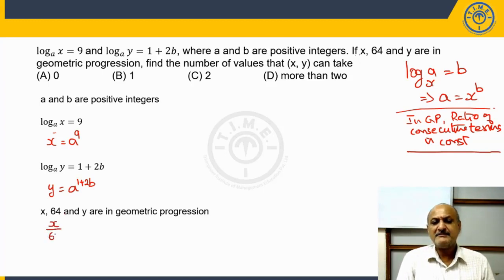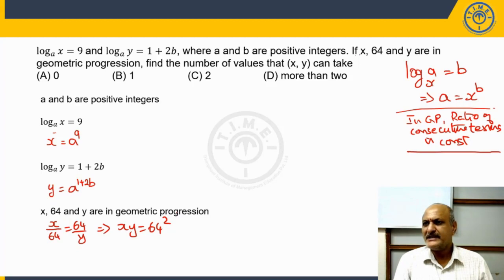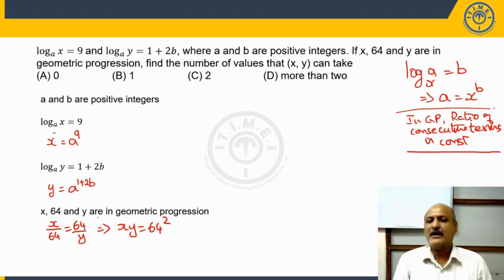Hence, we can write x/64 = 64/y, which implies x·y = 64 squared. If three terms are in a geometric progression, the square of the middle term equals the product of the other two terms. From the statement that x, 64, and y are in geometric progression, we identify that x·y = 64 squared.